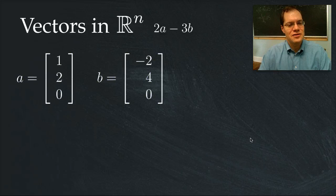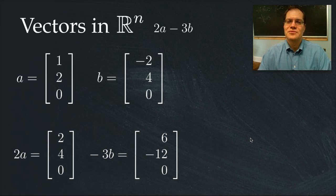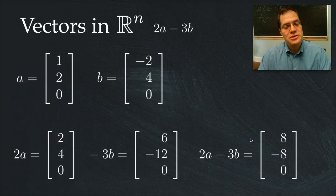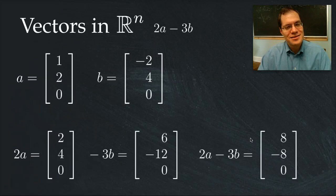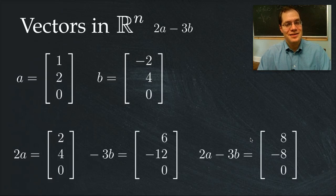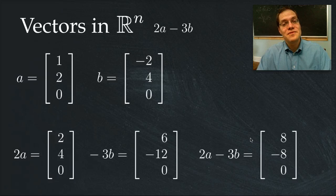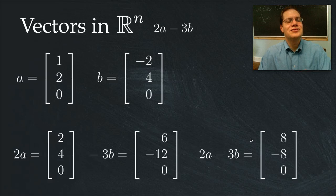Again, we're after the same linear combination. So the vectors 2a and 3b are seen right here. And the linear combination 2a minus 3b is here, 8 minus 8, 0. Take a moment to make sure that the numbers are correct. That's not the important thing here. The important thing is to note that a linear combination of two vectors in R^n is another linear combination, and that the concept continues to apply just as well as it did for polynomials and geometric vectors.